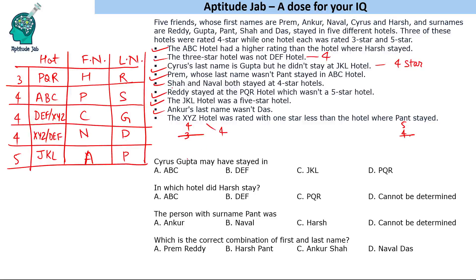Now answering the questions: Cyrus Gupta could have stayed in either DEF or XYZ, as both are four-star hotels and no unique assignment is possible. Harsh stayed at the PQR hotel. The person with surname Punth is Ankur. For the correct first-and-last-name combination: Frame-Shah is wrong, Harsh-month is wrong, Ankur-Shah is wrong — the correct answer is Naval Das.